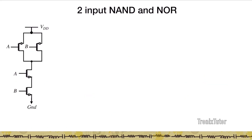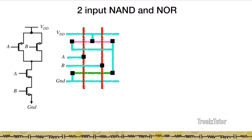Now let's draw the stick diagrams for the two-input NAND and NOR. The two-input NAND consists of an NMOS stack and PMOS connected in parallel. The stick diagram always starts with the poly lines. Since we have shared inputs for one PMOS-NMOS pair and another PMOS-NMOS pair, we label these poly lines A and B.